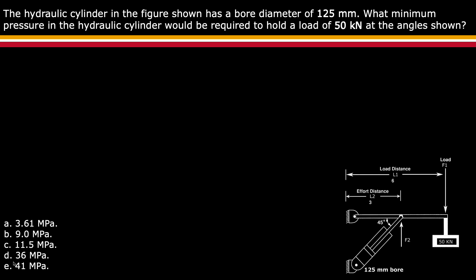The hydraulic cylinder in the figure shown has a bore diameter of 125 millimeters. What minimum pressure in the hydraulic cylinder would be required to hold a load of 50 kilonewtons at the angle shown?